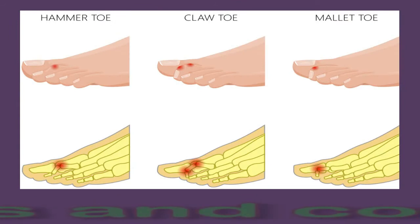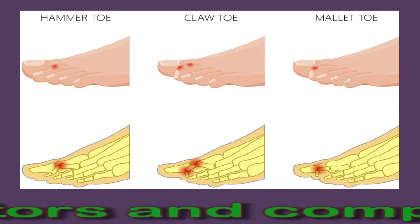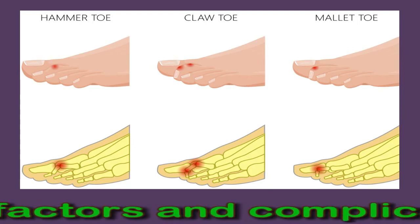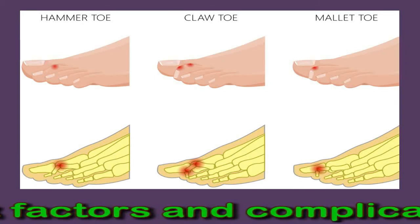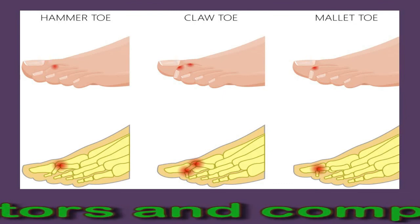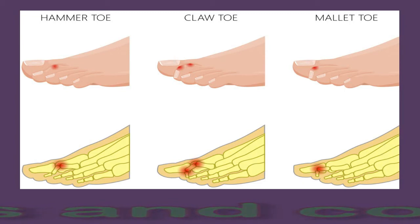Risk factors and complications: hammer toes are progressive, worsening over time if not promptly treated. The toe joint may become fixed and require surgery to straighten it. The longer a person wears improper footwear and ignores developing hammer toe, the more likely the toe will require surgery to release the tendons.